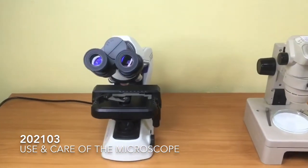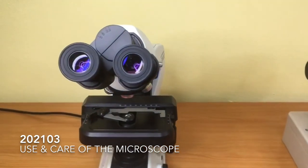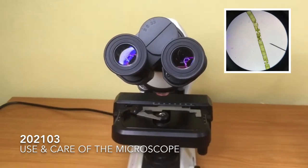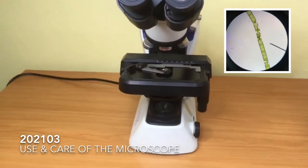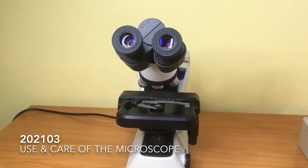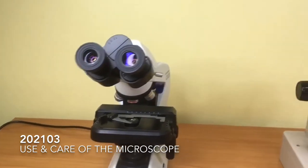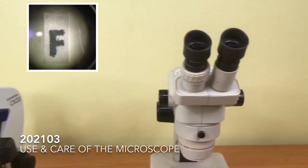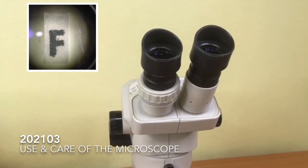Microscopes are one of the most important instruments used in almost all branches of biological sciences. We use microscopes to study objects that are too small to be seen with the naked eye.